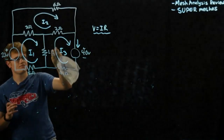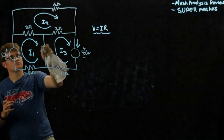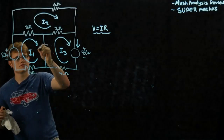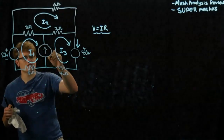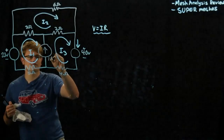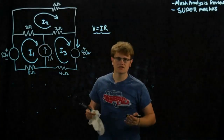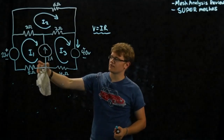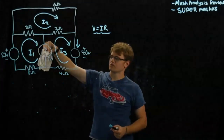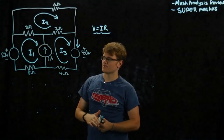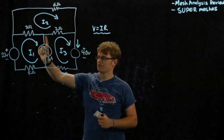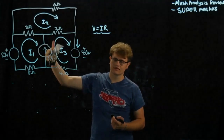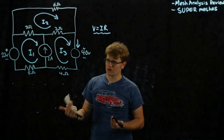We're going to erase the component that was there and put in a constant current source — let's say one amp. Now if we try to go around one of these meshes and perform regular mesh analysis, we can't, because this is a current source. There's no voltage across it that we can use in Kirchhoff's voltage law.